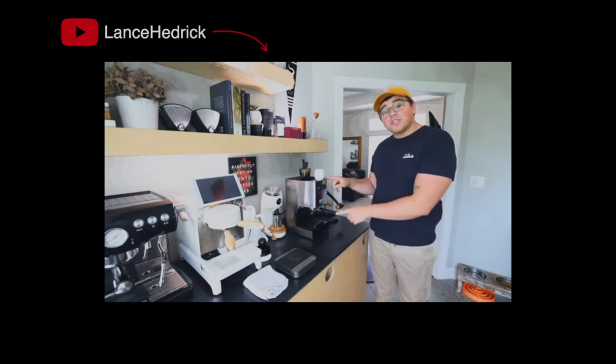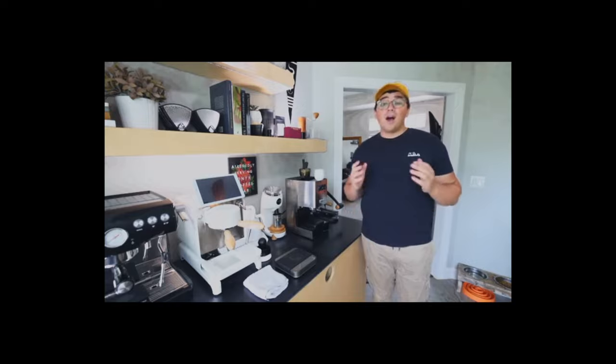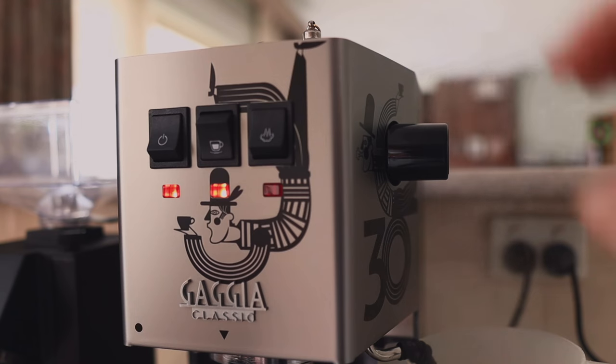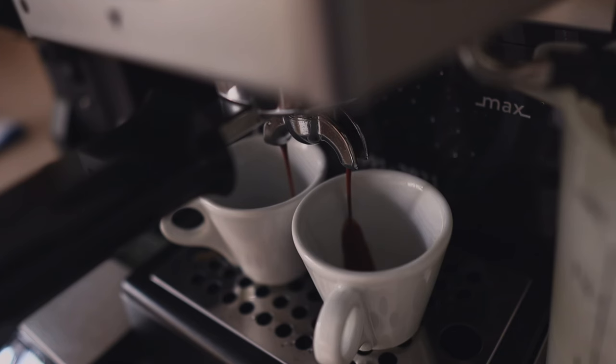When it comes to brewing, I use the poor man's pre-infusion as first shown by Lance Hendrick on his channel. I open the steam wand fully, which directs the water flow from the group head to the steam wand. Start the pump to the group head, then after 5 seconds and some pre-wetting to the coffee bed, close the steam wand to begin the extraction.